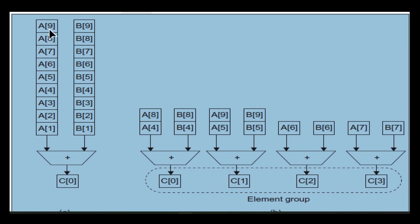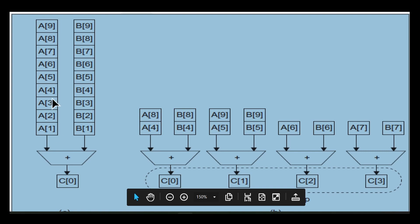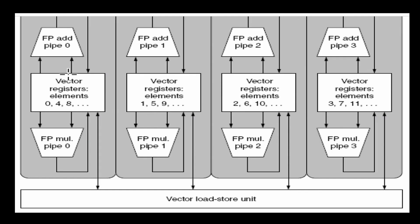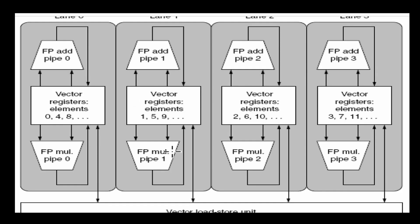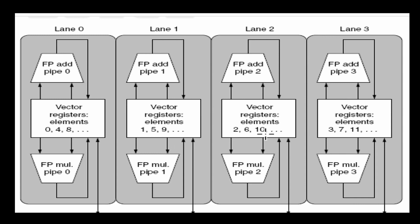Before adding the two vectors, they are brought from memory into vector registers. From the vector registers the ALU can take multiple data. When you have four lanes, the zeroth element goes to the first lane, the first element to the second lane, the third to the third lane, and the fourth to the fourth lane. If you need addition it goes to the add pipeline; if you need multiplication it goes to the multiply pipeline. Depending on the operation needed, different pipelines are used.